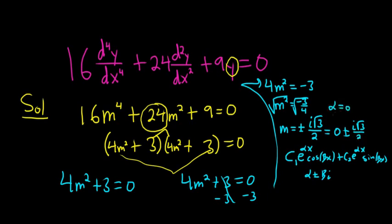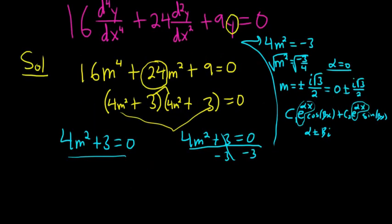So our alpha is 0. That means all of these e's are going to go away because e to the 0 is 1. But here's the tricky part - we wrote this twice, right? So this is a repeated complex root. In this case, we're going to have to write this down once and then write it down again and multiply by x due to the repetition.